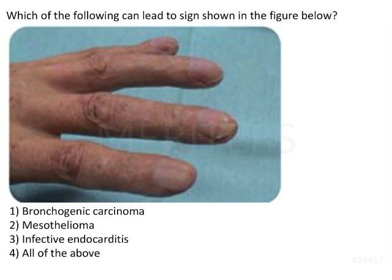Which of the following can lead to the sign shown in the figure below? If you see this particular sign, you will be able to appreciate the convex nail plate. At the same time, there will be a loss of the angle between the lunula — that is the lower part of your nail plate — and your proximal nail fold.